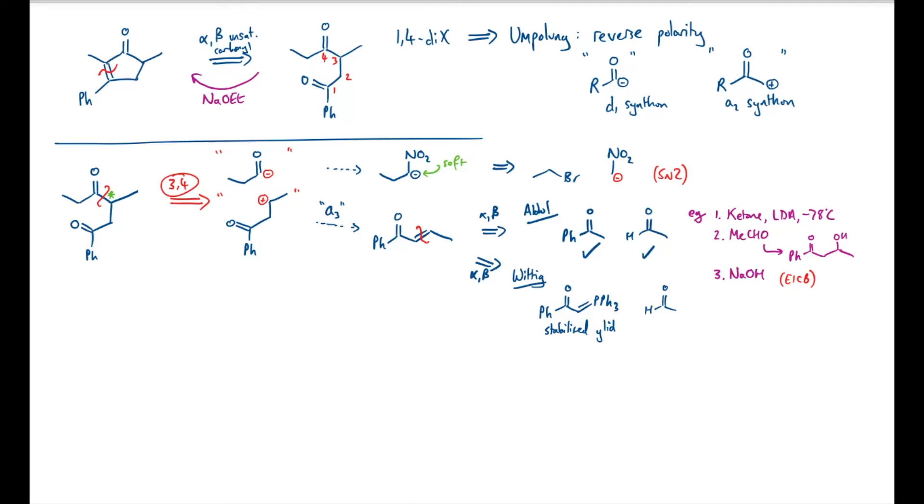So to make the ylide, I would go back to the alpha-halocarbonyl species, say with the bromide. Knowing that to go backwards, I could treat this with triphenylphosphine, and then probably add a reasonably strong base to generate the ylide.